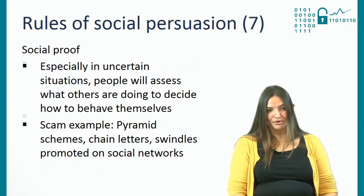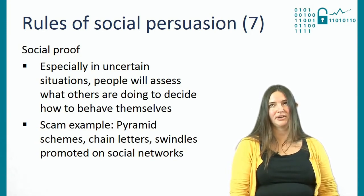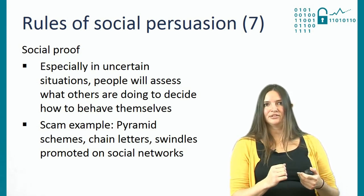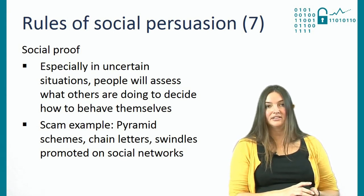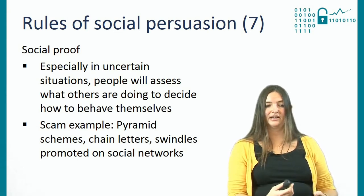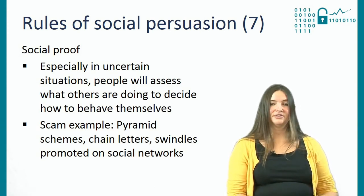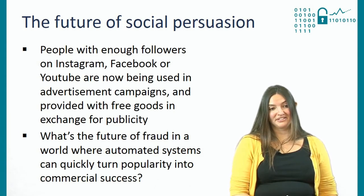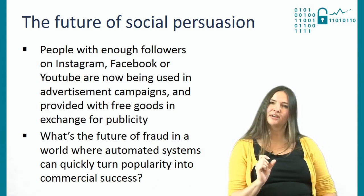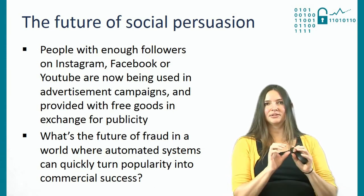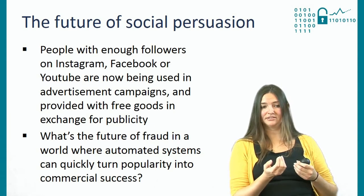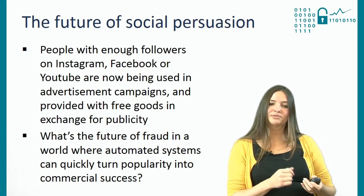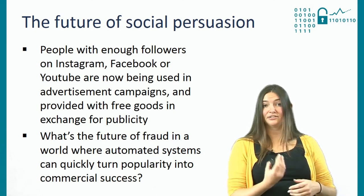The last principle is social proof — especially under uncertain circumstances when you don't know what to do, people look around and see what other people are doing, and use that information to decide how they're going to behave themselves. This can be seen in pyramid schemes, chain ladders, and swindles promoted on social networks — you see other people doing it, so you're more likely to engage yourself. Looking ahead, we now live in a world where people with enough followers on Instagram, Facebook, or YouTube are used as advertisement campaigns, provided with free goods in exchange for publicity, in a world where automated systems can quickly turn popularity into financial success.